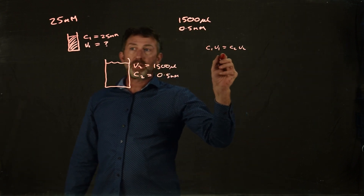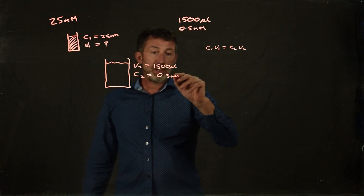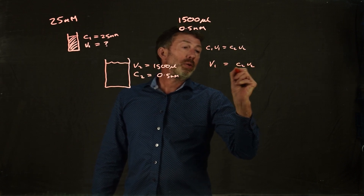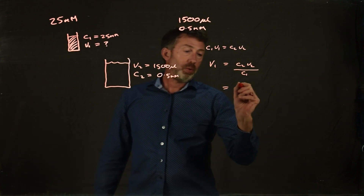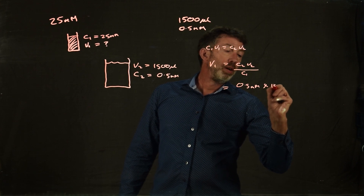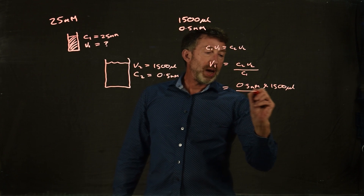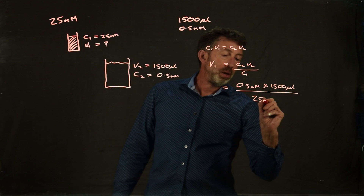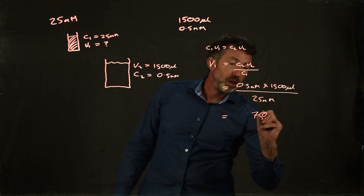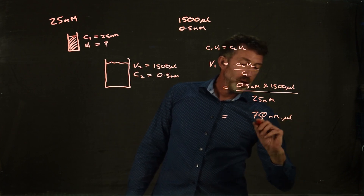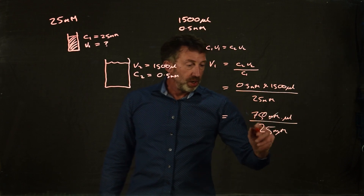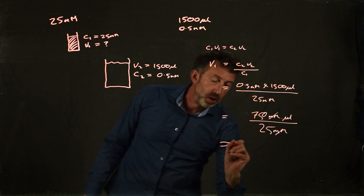So C1 is 25 millimolar, V1 is the unknown, V2 is 1500 microliters, and C2 is 0.5 millimolar. We want to solve for V1, so V1 = C2×V2 / C1, which equals 0.5 millimolar times 1500 microliters, divided by 25 millimolar. So 0.5 times 1500 is 750 — keeping the units, that's 750 micromolar·microliters — divided by 25 millimolar. The millimolars cancel out, and 750 divided by 25 equals 30 microliters.